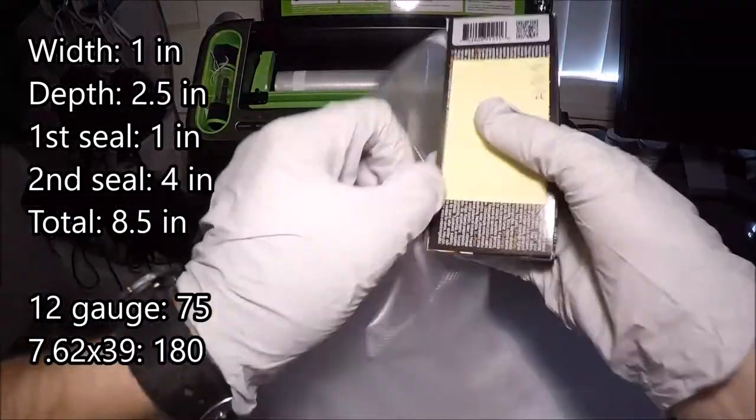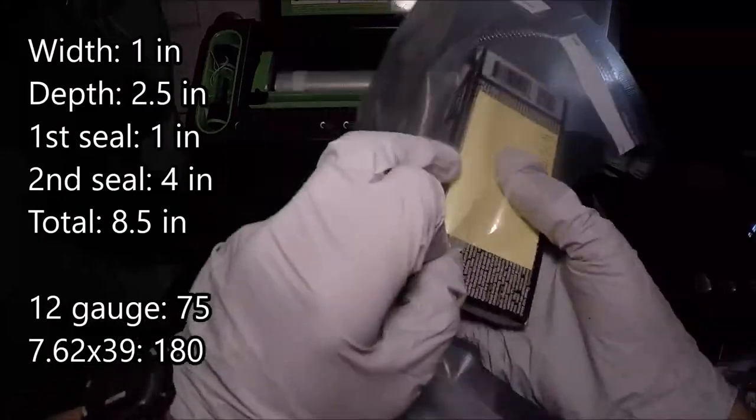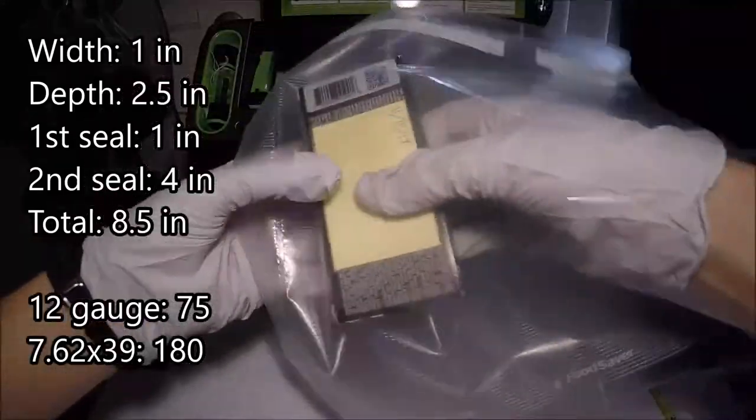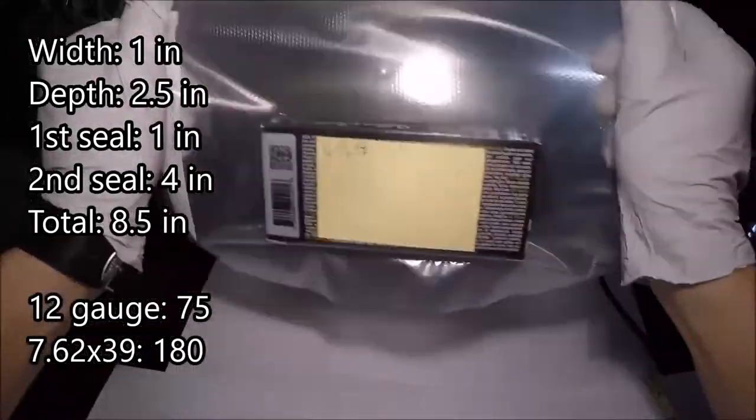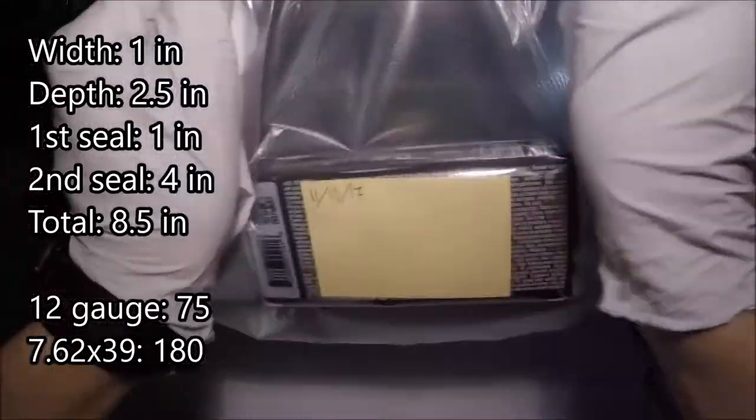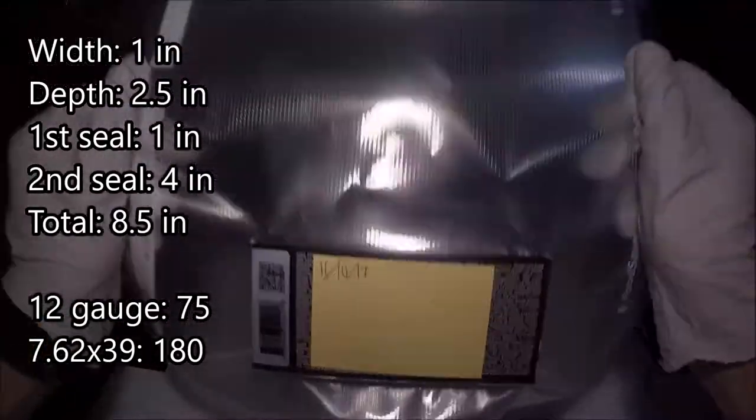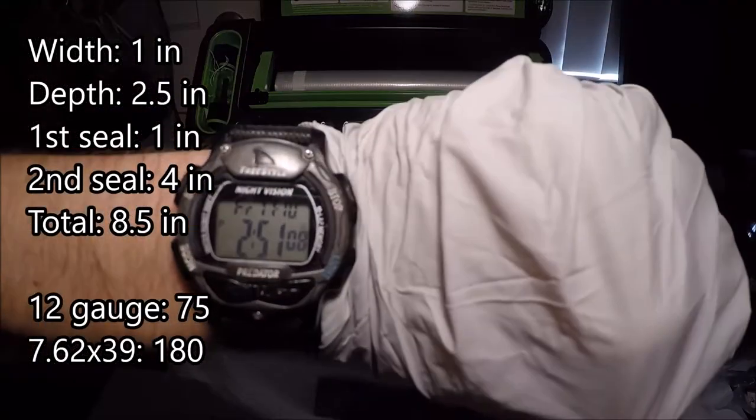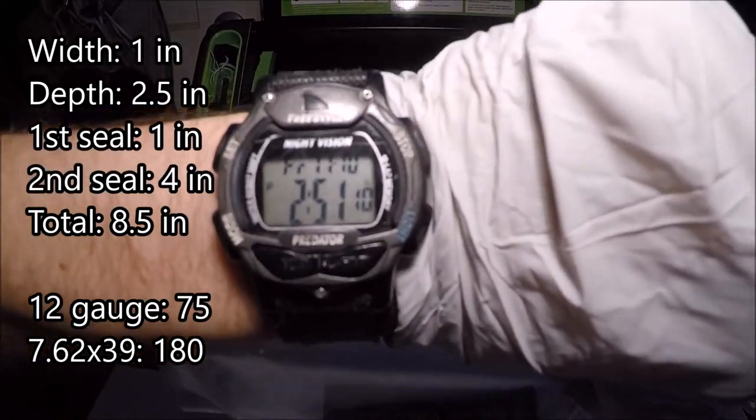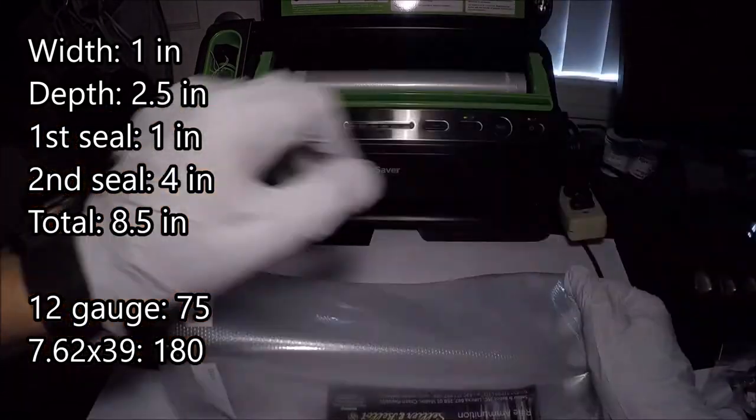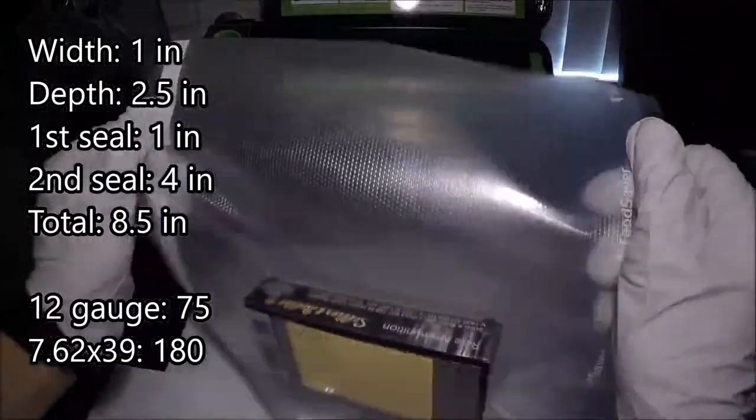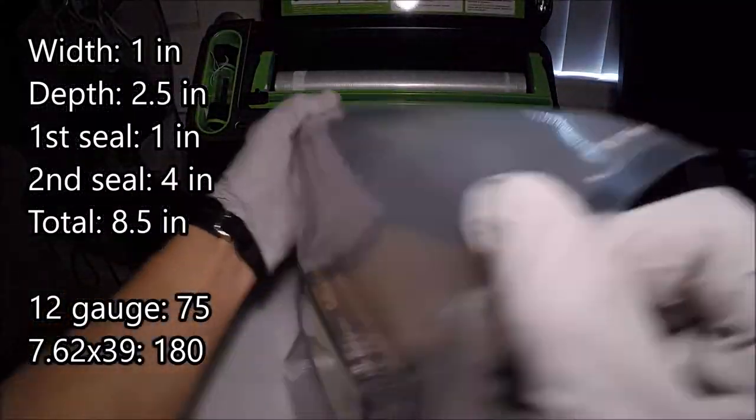Next thing we're going to do is go ahead and drop it inside the bag just like this. Try to get the box nice and centered inside the bag. Let's take a look at our time, it's been about 20 seconds I would guess. Let's go ahead and feed it into the machine, of course with the curled side down.